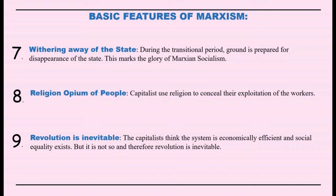The eighth feature is religion as the opium of the people. Marx was opposed to religion. Marx linked religion with capitalist exploitation — capitalists used religion as a cover to conceal their exploitation as well as a tool to deceive the masses. Thus, Marx believed that religion acted as opium on the minds of the people.